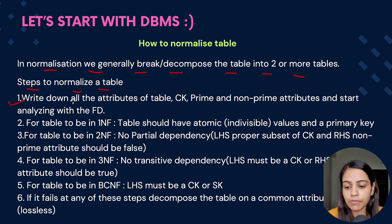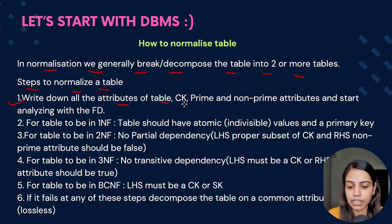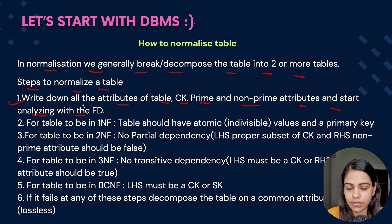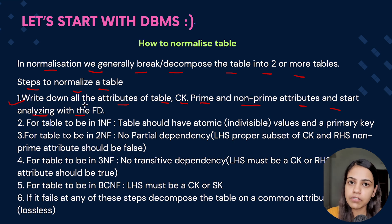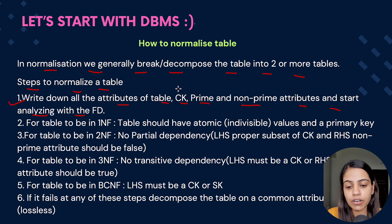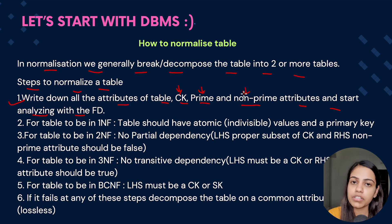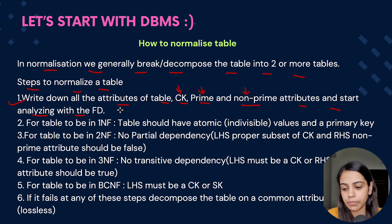The very first step is we have to write down all the attributes of the table, candidate key, prime and non-prime attributes, and start analyzing with the functional dependency. In the question we would be provided with a relation and their functional dependency. We have to find out the candidate key, prime and non-prime attributes, and we have to start analyzing the functional dependency.